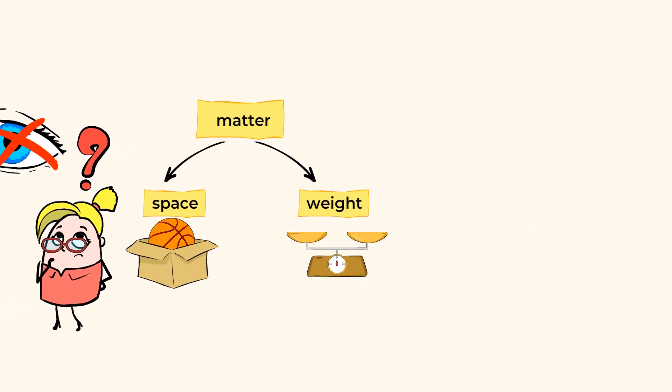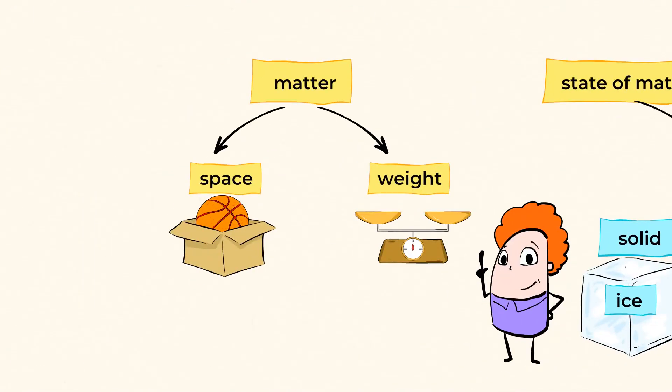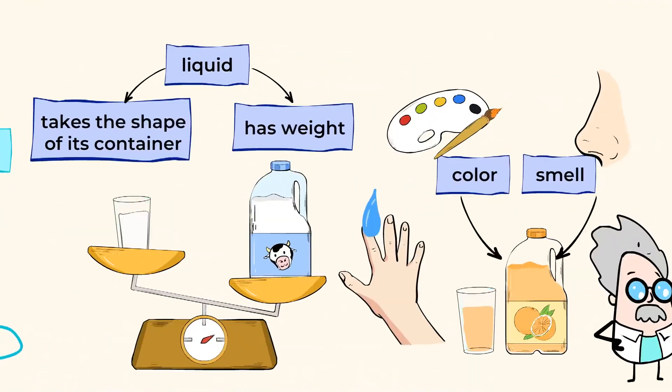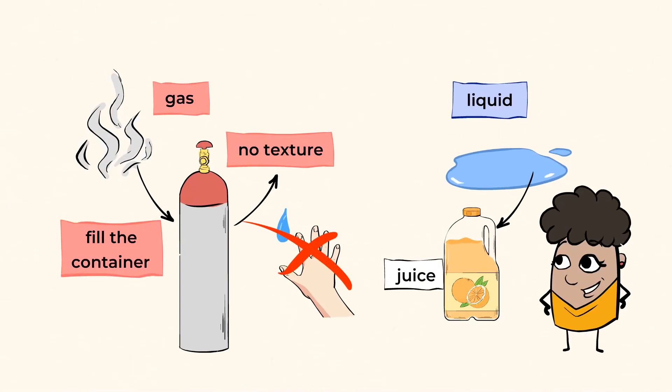And remember, there are three different states of matter: solid, liquid, and gas. So let's recap. All matter has weight and takes up space. Solids have a shape. Liquids take the shape of the container they're in, and they feel wet when we touch them. And gases fill up whatever object they're in, and you can't touch them.